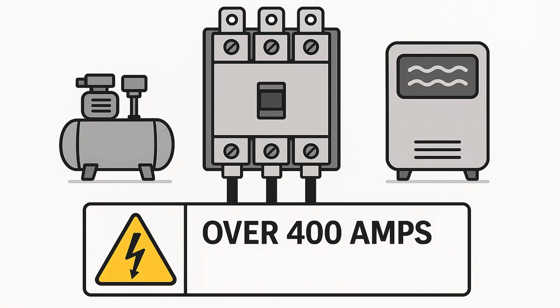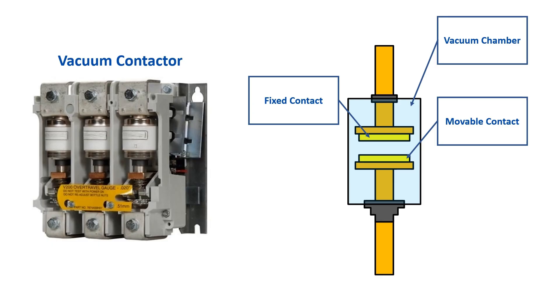One final note about contactors. When you're dealing with currents over 400 amps, it's recommended to use vacuum contactors. At these high current levels, there's a serious risk of arc flash during switching. Vacuum contactors solve this by sealing the arc inside a vacuum chamber. With no air or oxygen, the arc is extinguished almost instantly. That makes them not only safer but also longer-lasting.